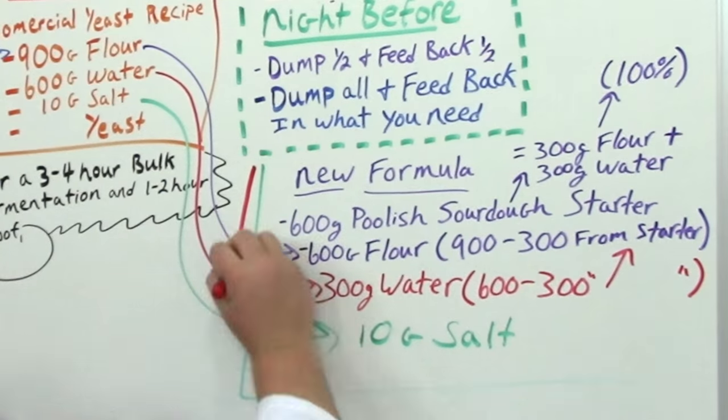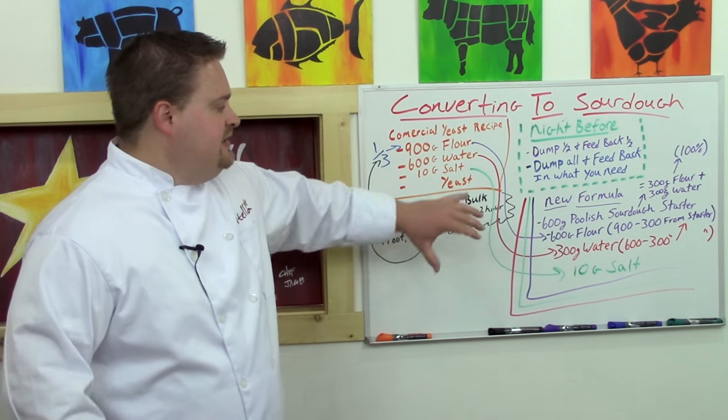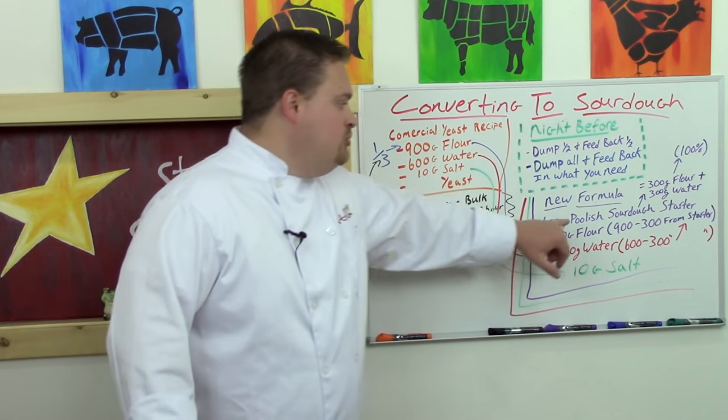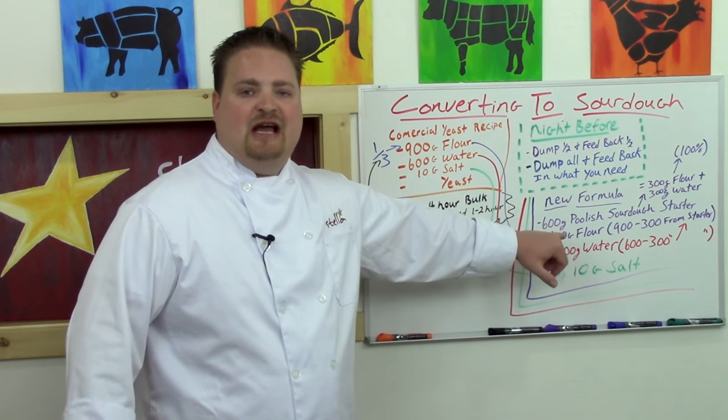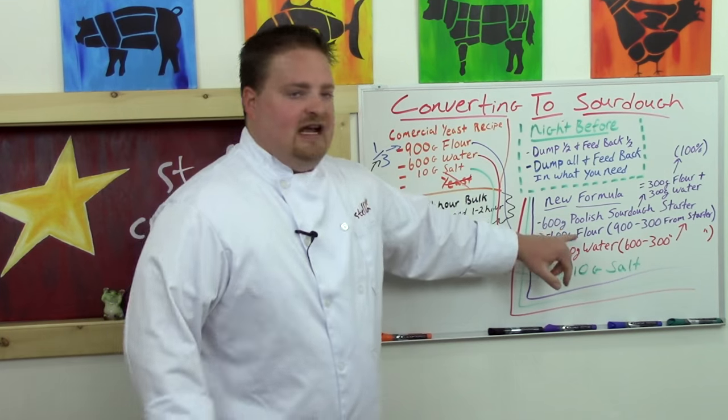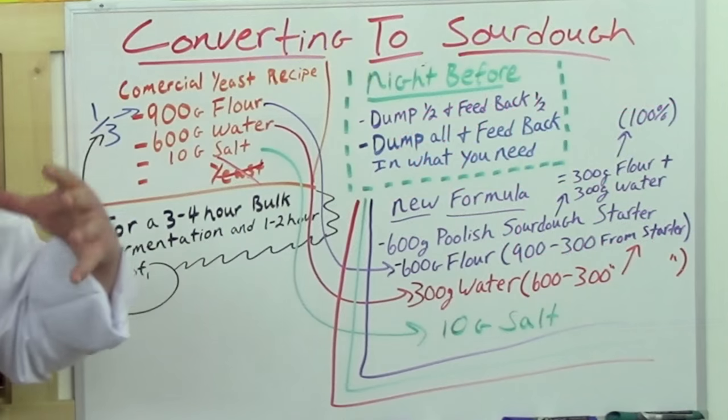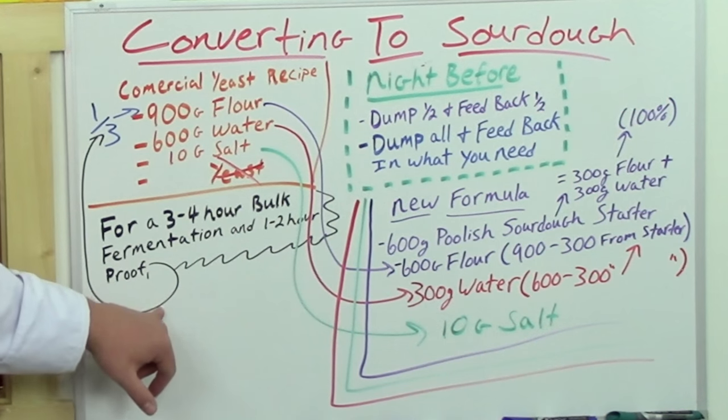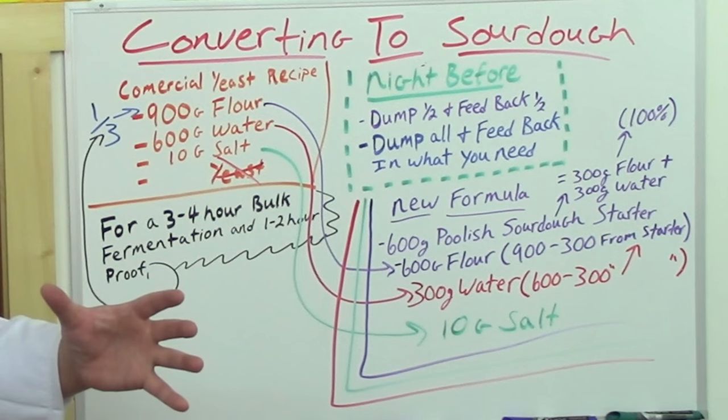All that we need to do now is some simple subtraction. Our 900 grams of flour now becomes 600 grams of flour, our water goes from 600 grams to 300 grams, and our salt ratio stays the same. Obviously, because we have the yeast already contained within our poolish sourdough starter, we no longer need the yeast.